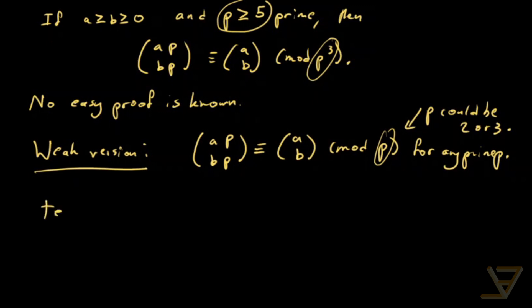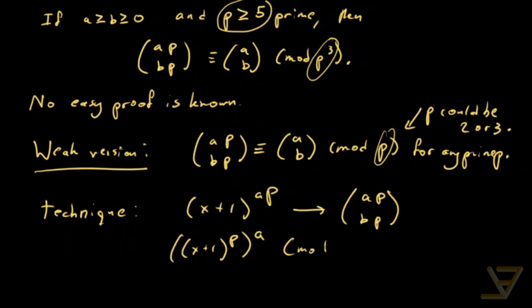Our technique is to do x plus 1 to the power of a p and expand it so that we get the coefficient a p choose b p. And the other part of the technique is to expand it as x plus 1 to the power of p to the power of a mod p.